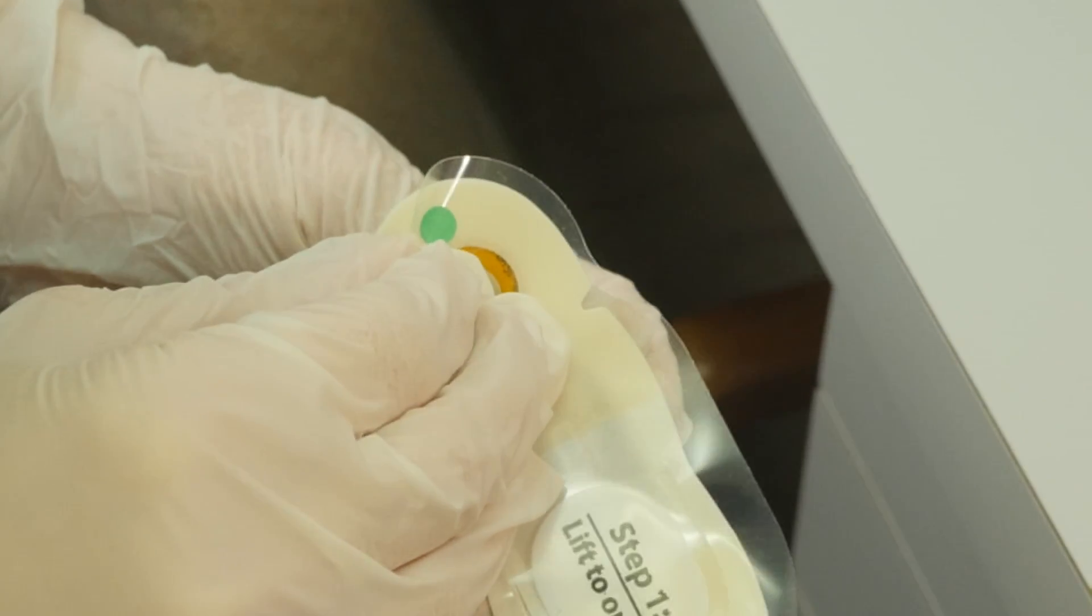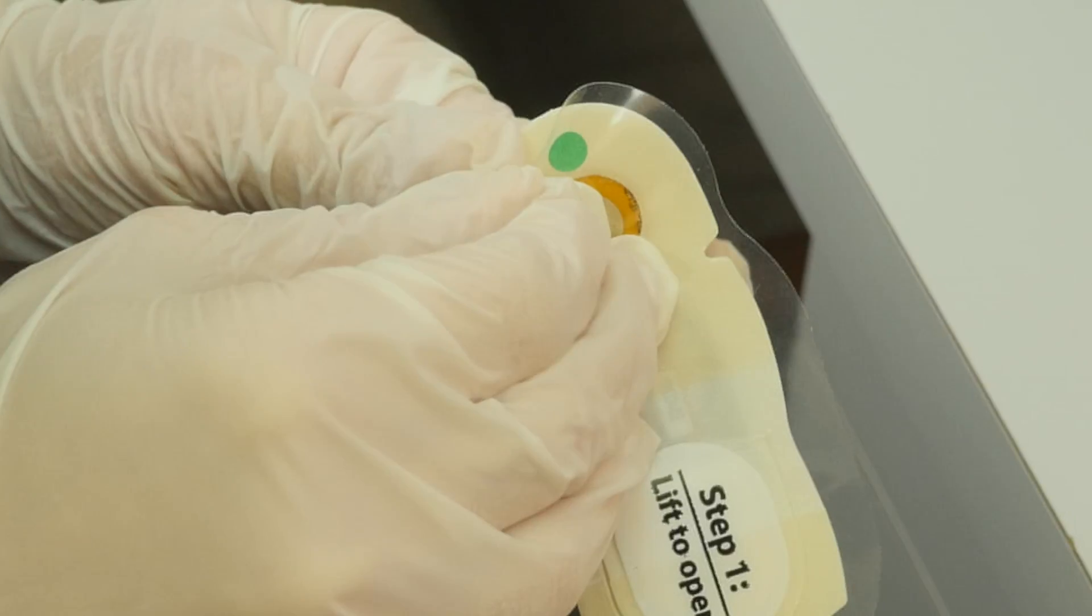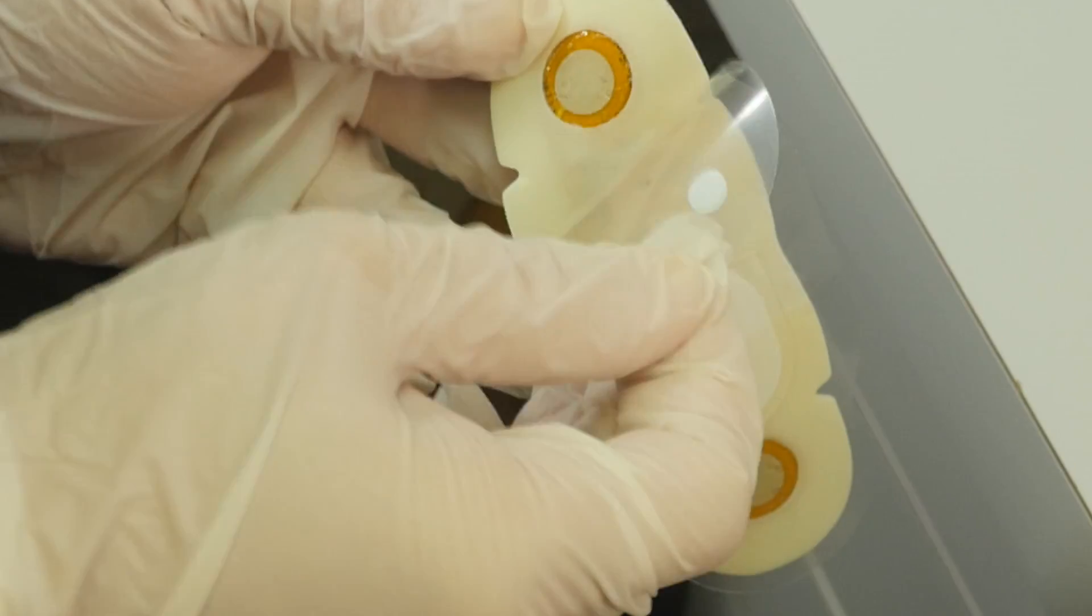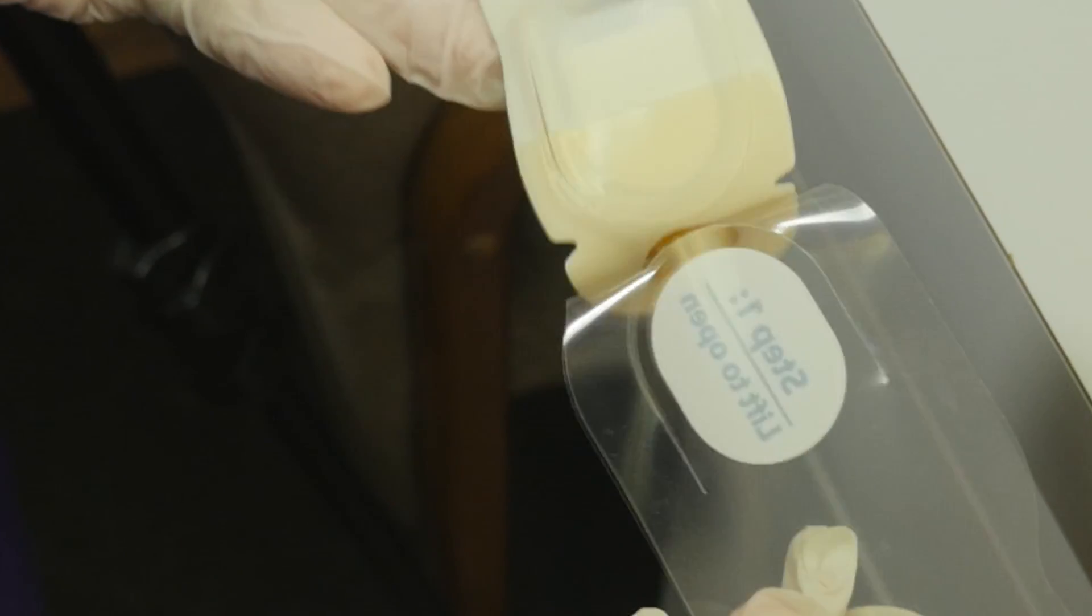Locate the green tab and separate the clear release liner from the patch. Be careful not to touch the adhesive area on the back. Remove the patch.